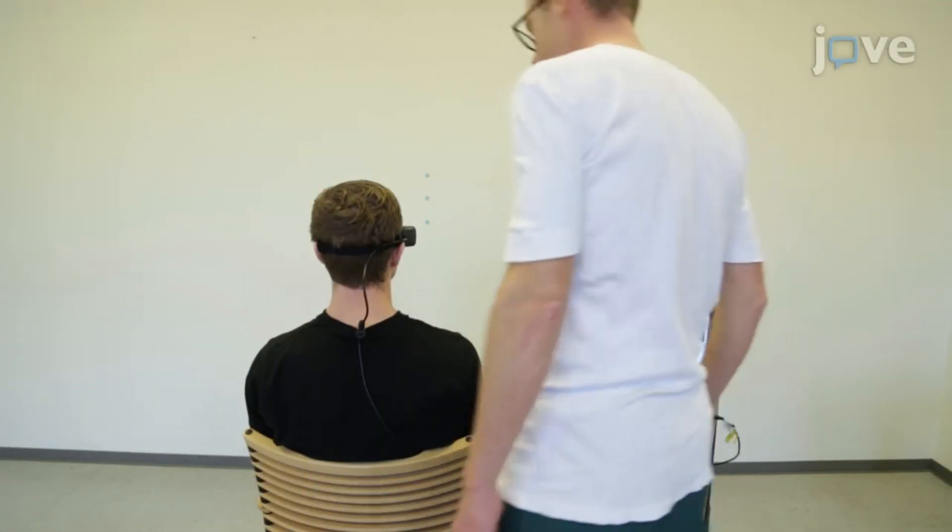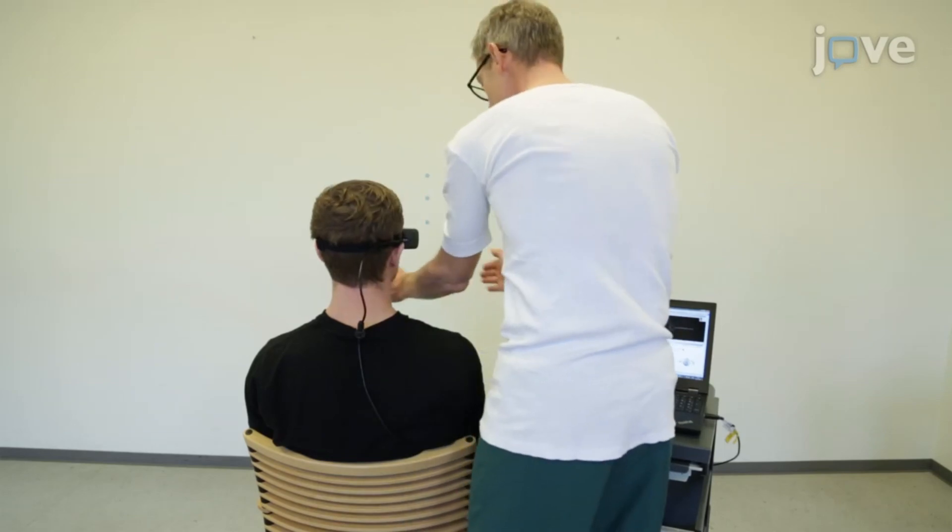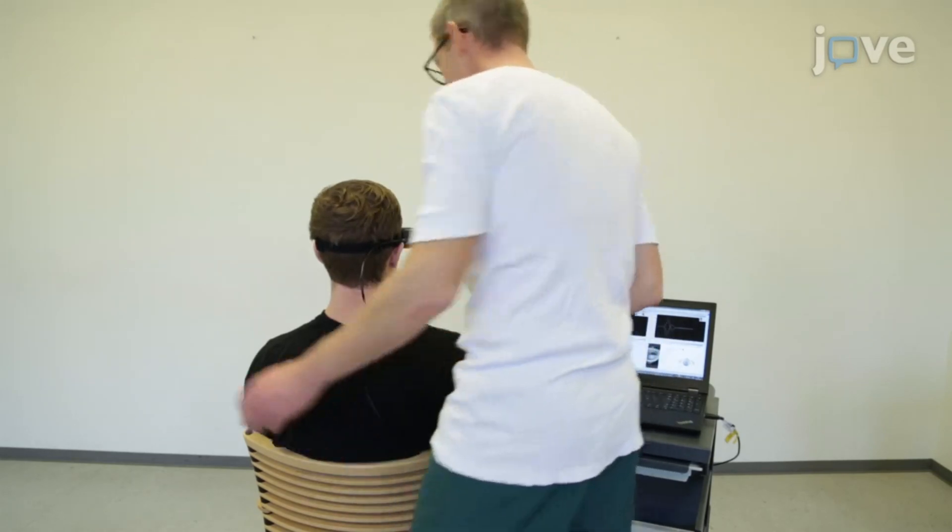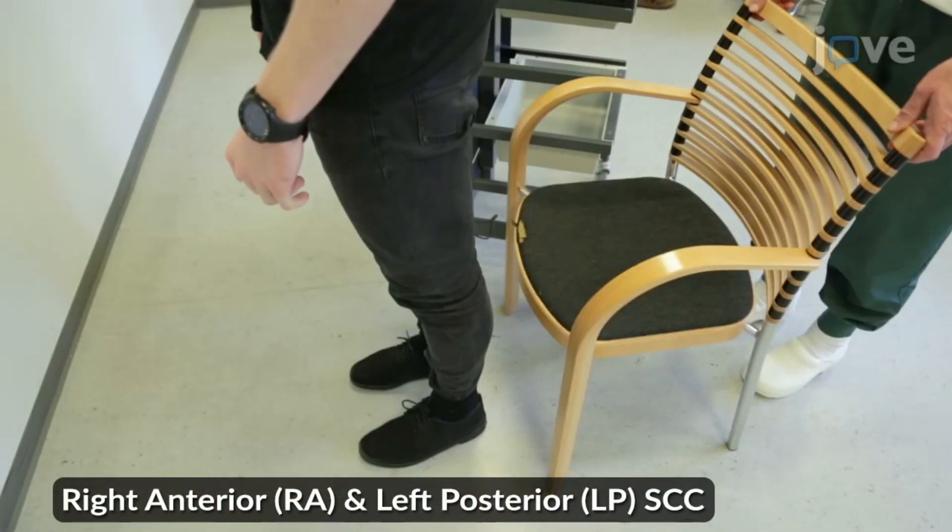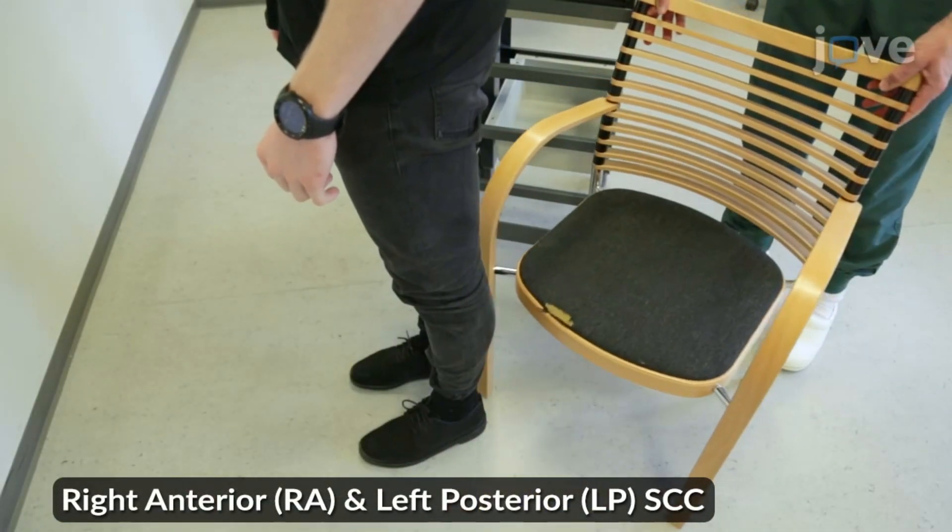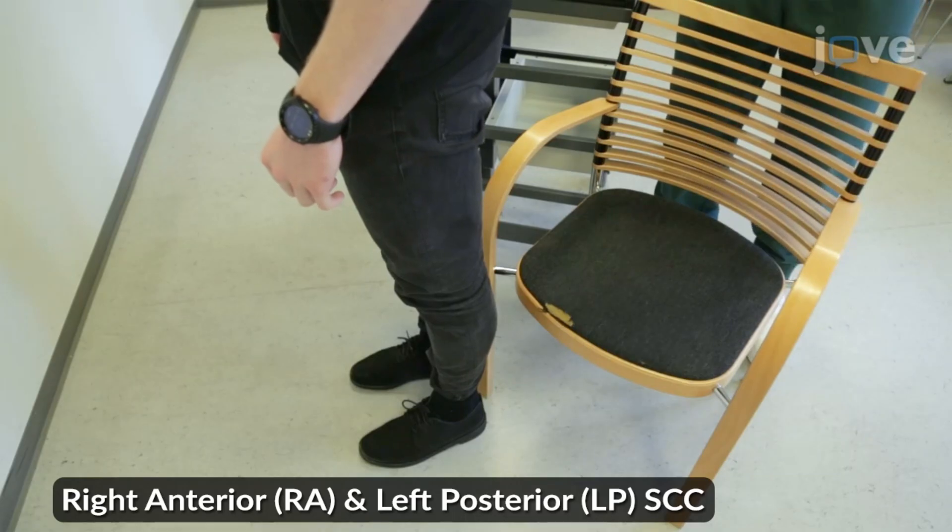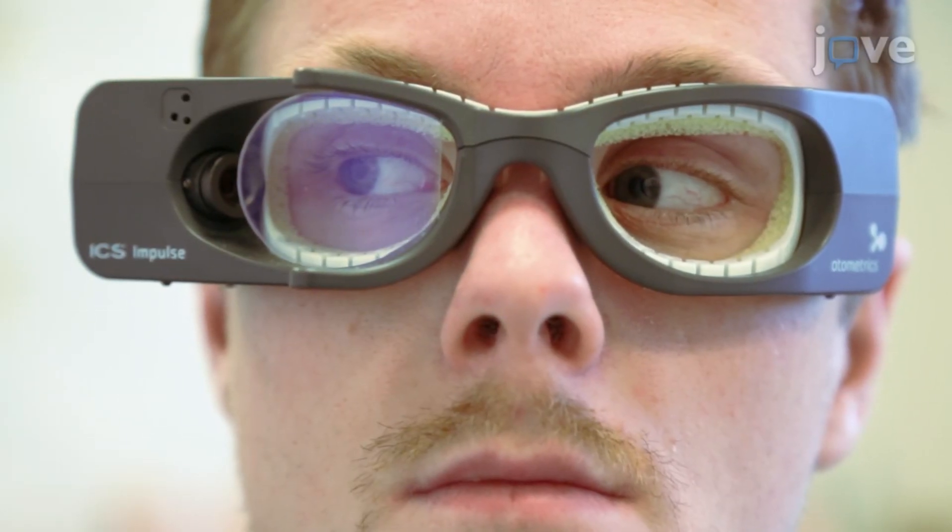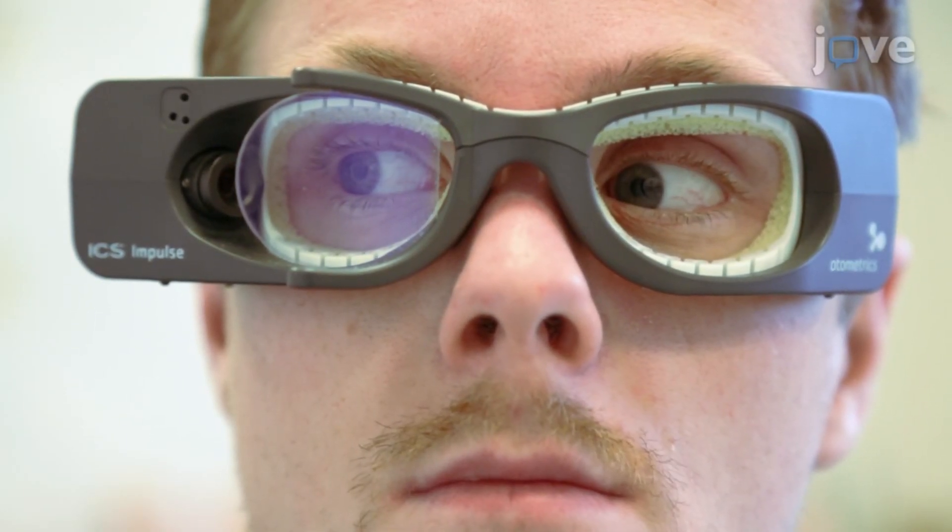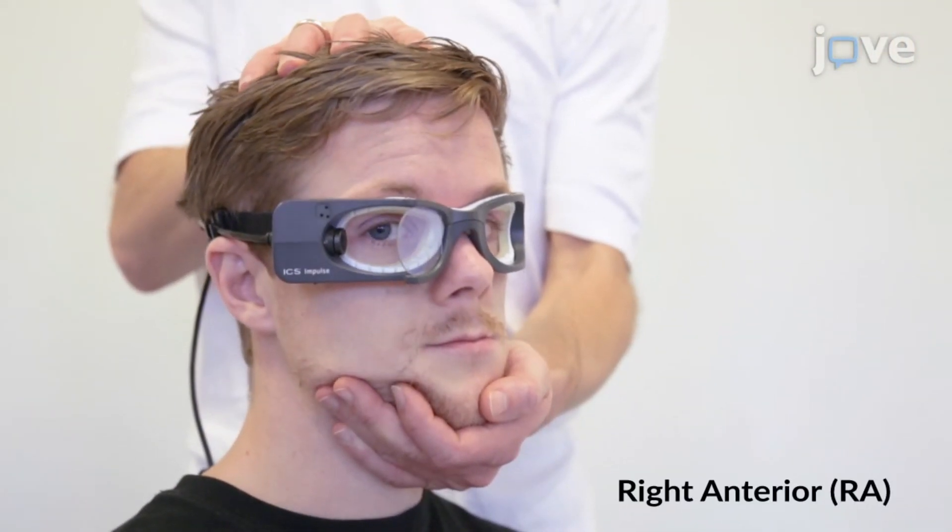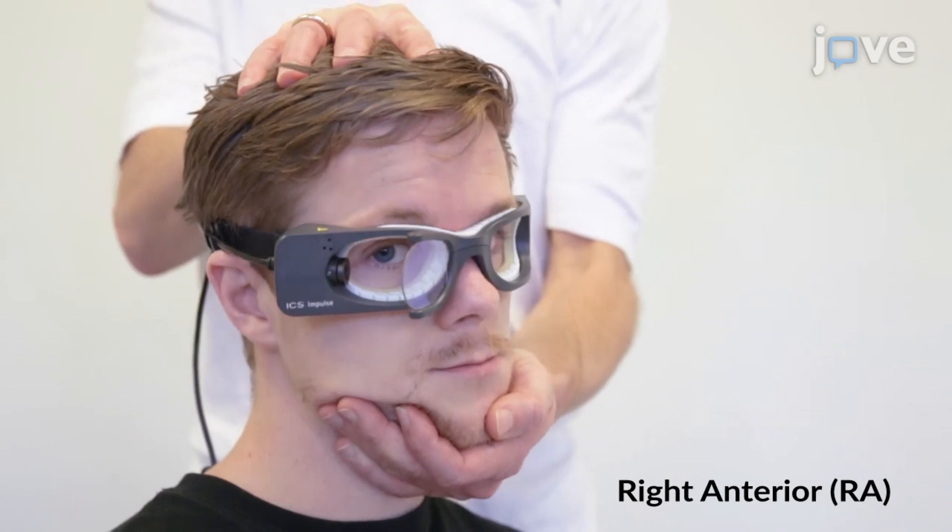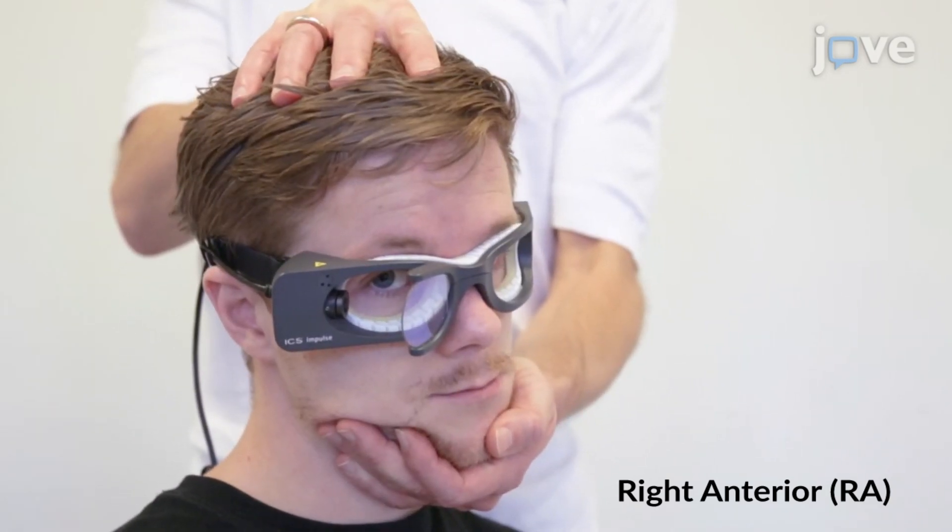Then use the 2D VHIT test method with System B by rotating the chair 45 degrees to either side. Turn the solid chair 45 degrees to the left, and ask the participant to look at the fixation dot. Then, for anterior SCC testing, rotate the participant's head forward in the pitch plane perpendicular to the wall.